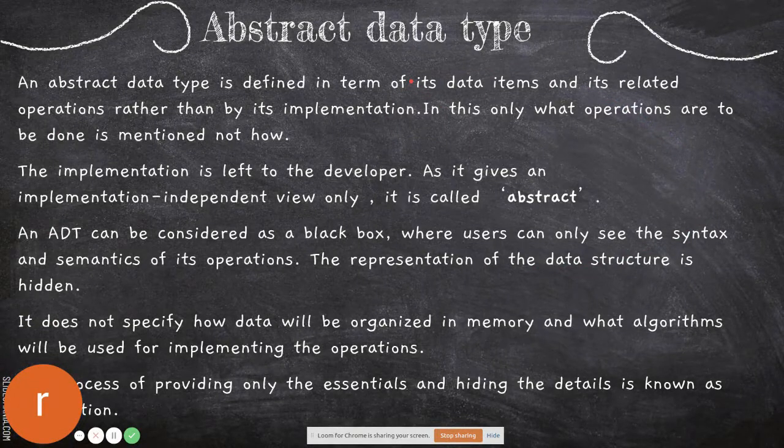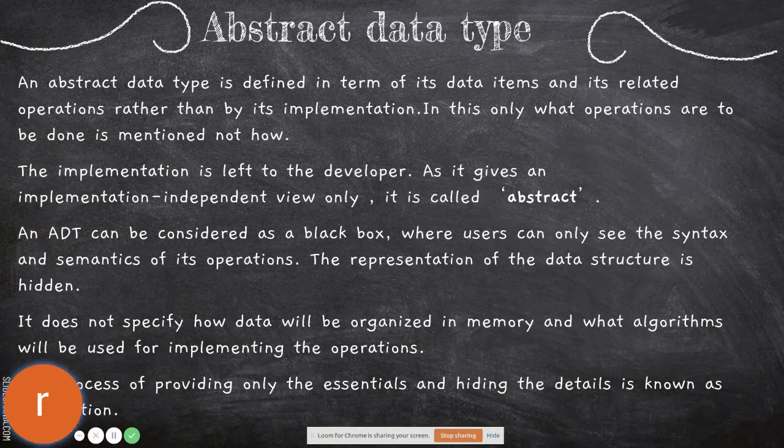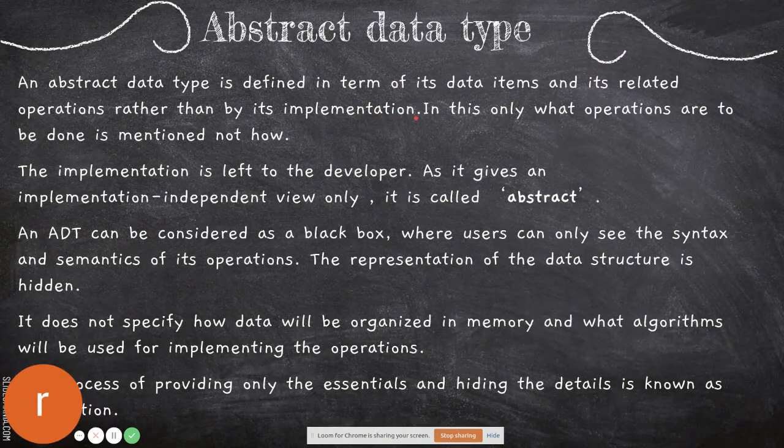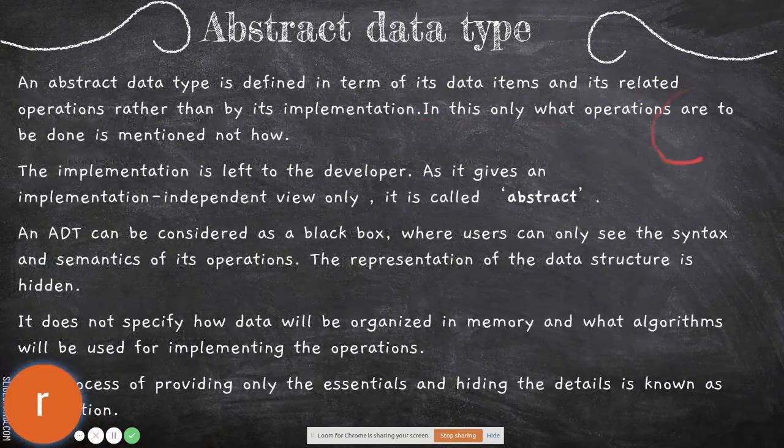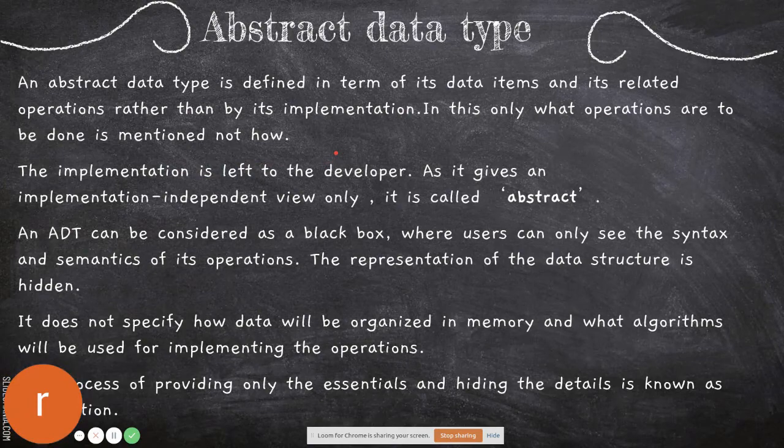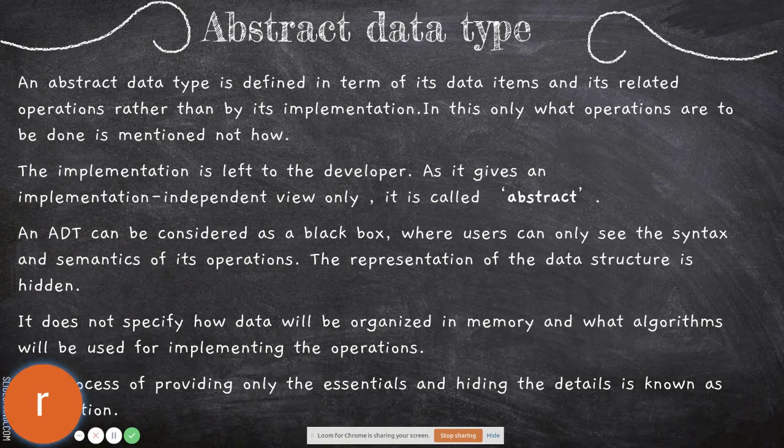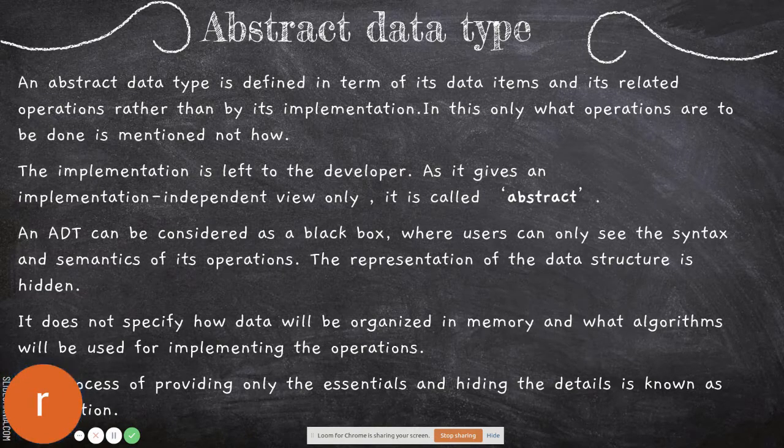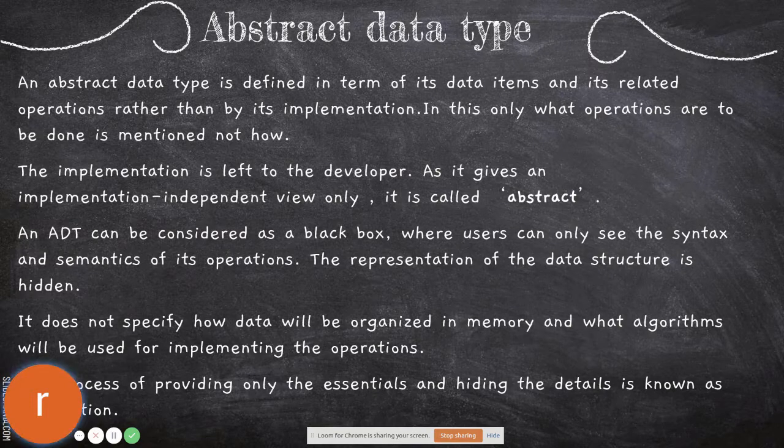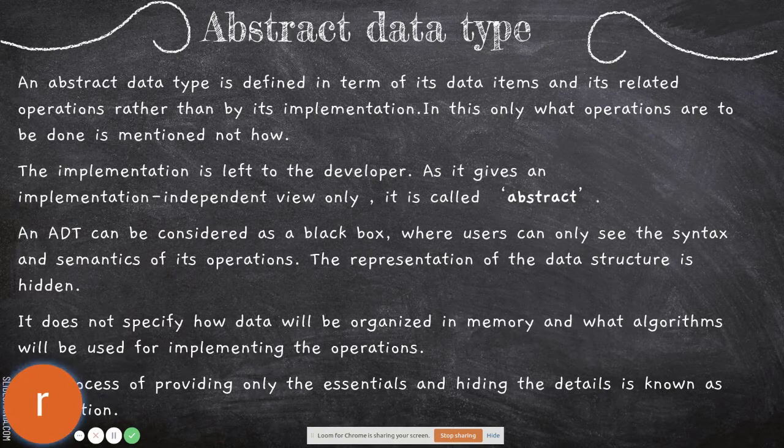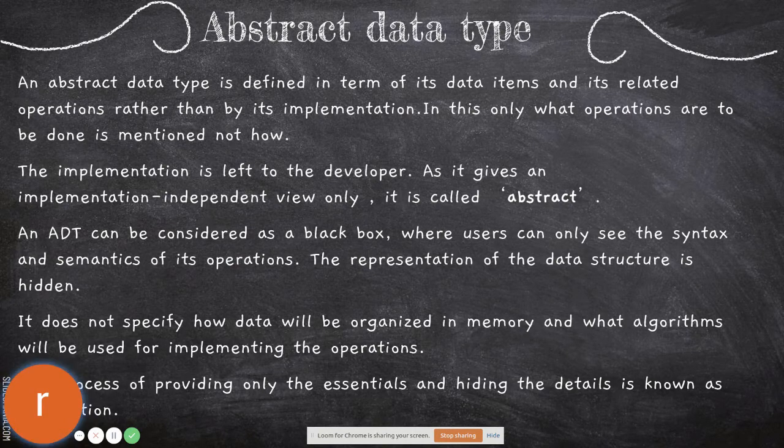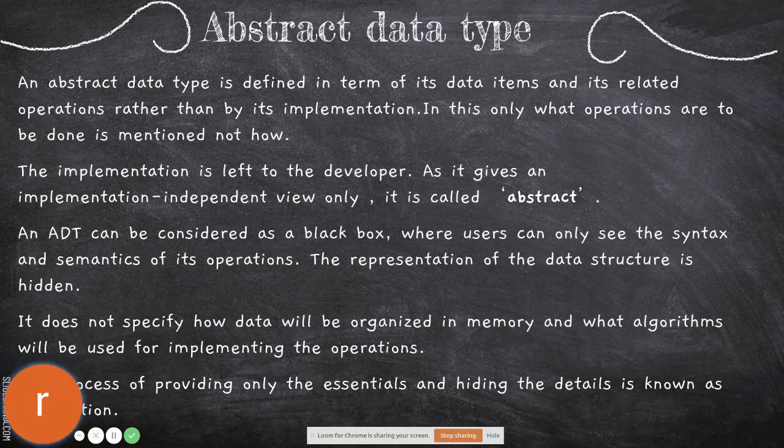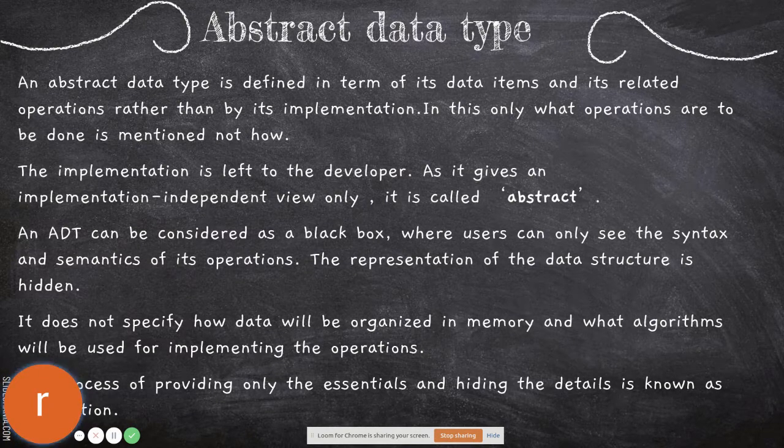What is an abstract data type? An abstract data type is defined in terms of its data items and its related operations rather than by its implementation. Only what operations are to be done is mentioned, but not how. You will be given the function and what it will do, but no implementation or coding is given. The developer has to develop their own code for the given function, using the data structure and operations specified.